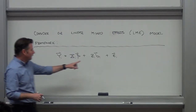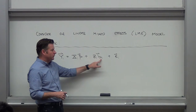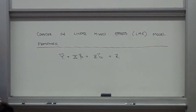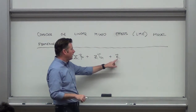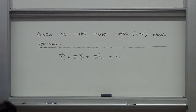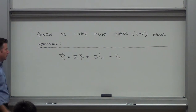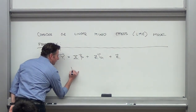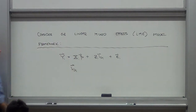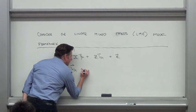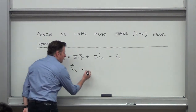The key thing now is I've got subject-specific parameters — in quotes — and some residual error. The typical assumptions we make: we need something to simplify the system. We don't want to analyze each individual separately, so we put structure on the model.